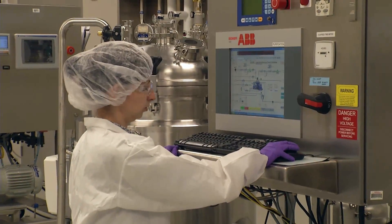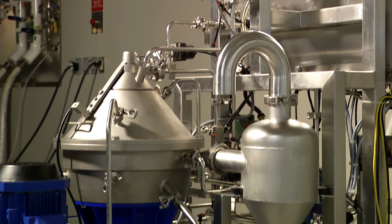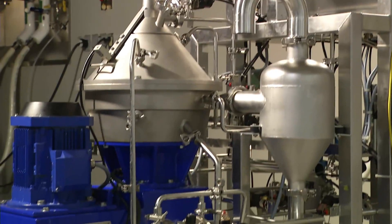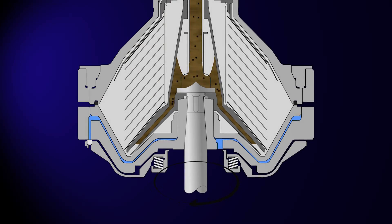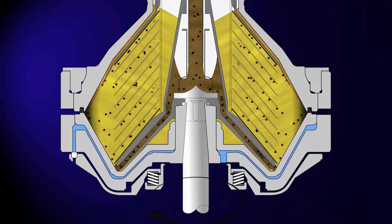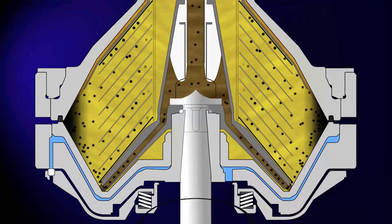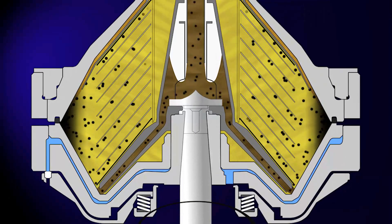Once the centrifuge reaches a stable running speed, the inlet valve is opened and broth enters the bowl. The centrifugal force causes the solids to collect on the sides of the bowl, much like the spin cycle on your clothes washer.